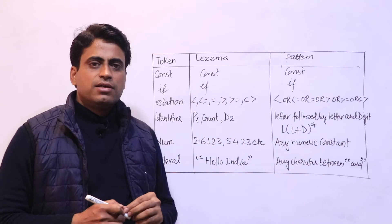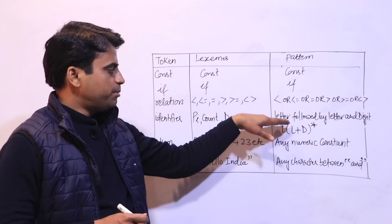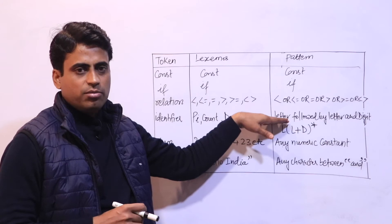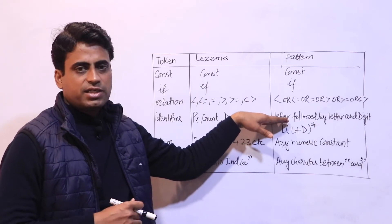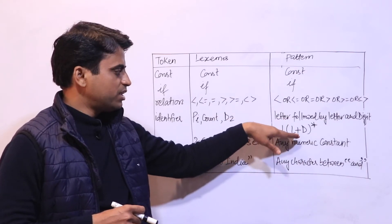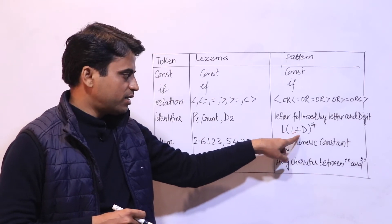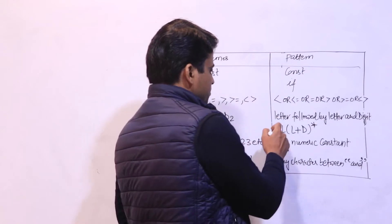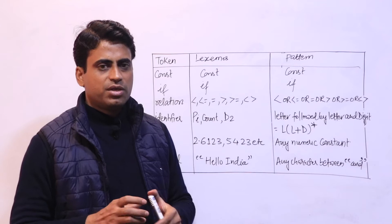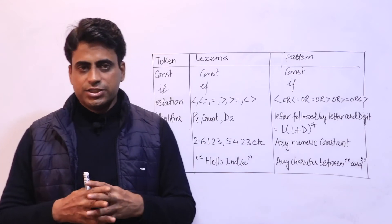Next token is identifier. For identifier, what are the rules? The pattern is letter followed by letter and digit. When you declare an identifier, how will you recognize identifier? First should be letter and letter followed by letter or digit. For this, regular expression will be first letter L, indicating letter, and letter followed by letter plus digit whole star.